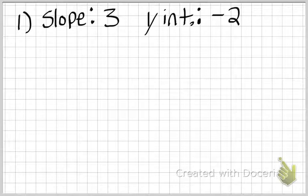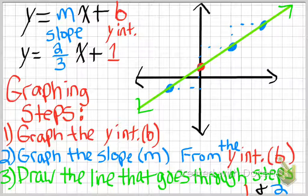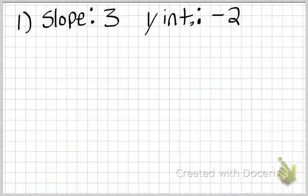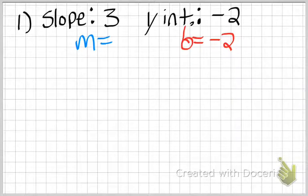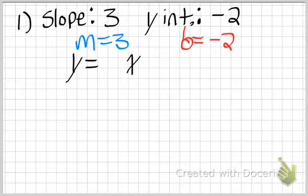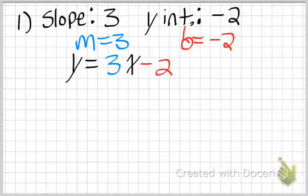In this example, write the equation of the line that has a slope of 3 and a y-intercept of negative 2. Identify what is m and what is b, and plug them in. The y-intercept is negative 2, so b equals negative 2. The slope is 3, so m equals positive 3. Slope-intercept form is y equals mx plus b, so plug in for m and b. m is the slope, so 3 goes in front of x — that's 3x. b is negative 2, so after the x it's minus 2. The equation is y equals 3x minus 2.